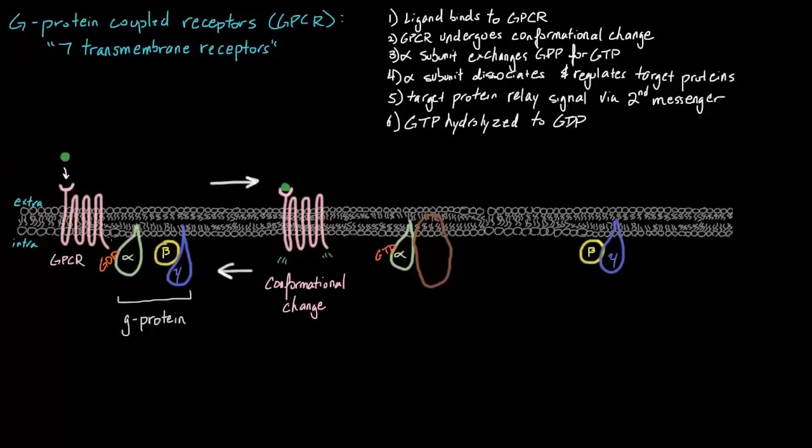Now that we actually know the steps to this, let's talk about an example. A very common example of GPCR function in our cell actually involves epinephrine or adrenaline. This is our fight or flight response.